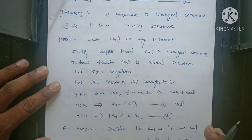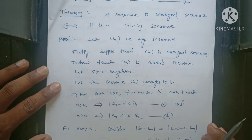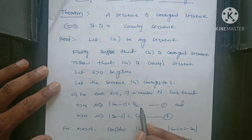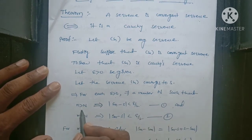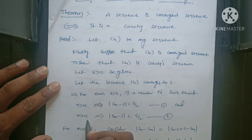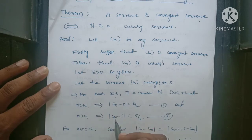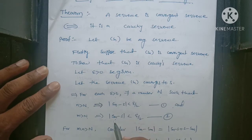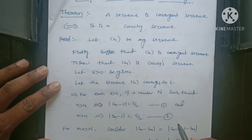This condition holds for n greater than capital N. If I am taking m greater than capital N — just replacing n by m — then m greater than capital N implies mod(Sm minus L) less than epsilon by 2. This is equation 2. Now consider m, n both greater than capital N.